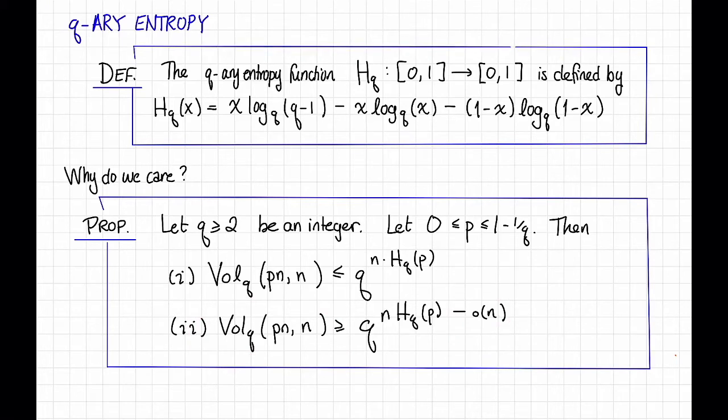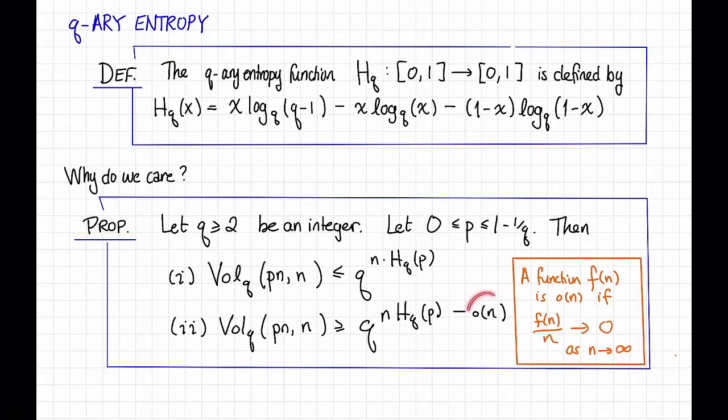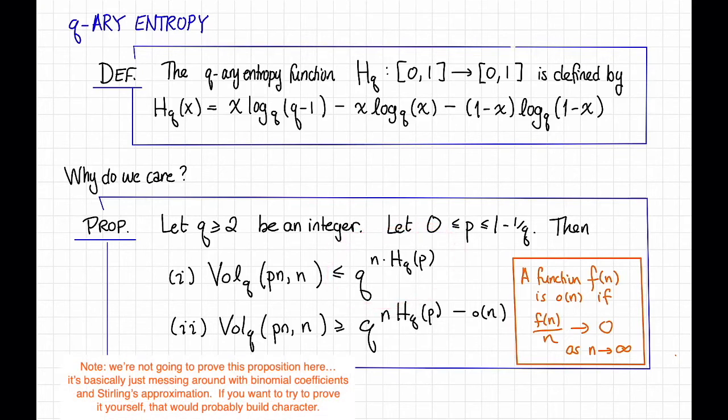Here, a function f is little o(n) if the ratio f/n goes to 0 as n goes to infinity. So we should think of this term here as negligible compared to this term. Thus, essentially what this proposition is saying is that the volume of this Hamming ball is more or less equal to q^(n·H_q(p)).